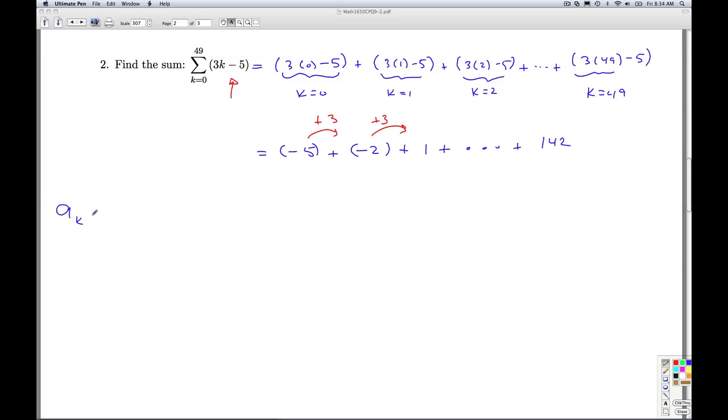If I look at a sub k is 3k minus 5. If I look at a sub k plus 1 minus a sub k, that would be 3(k+1) minus 5 minus (3k minus 5). And when all this stuff cancels out, I'm just left with 3. So this proves, in fact, that it's an arithmetic sequence with a common difference of 3.